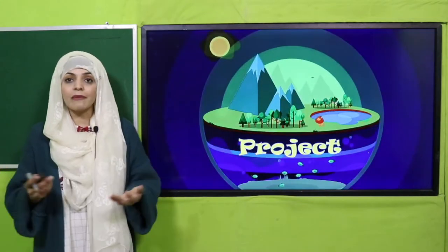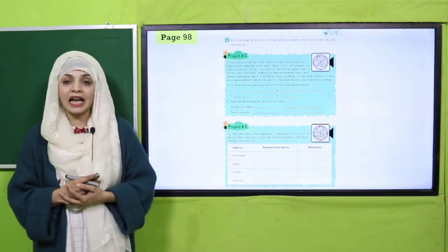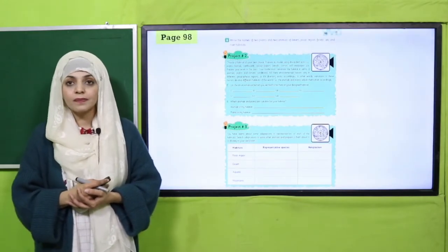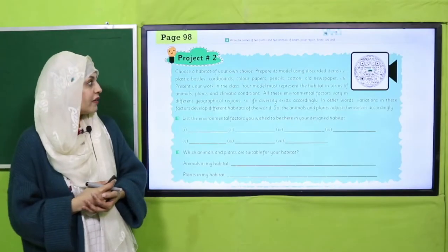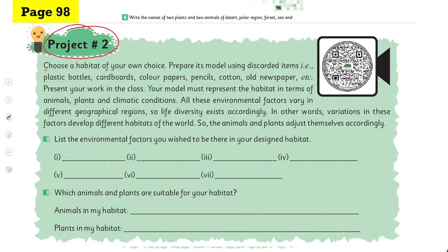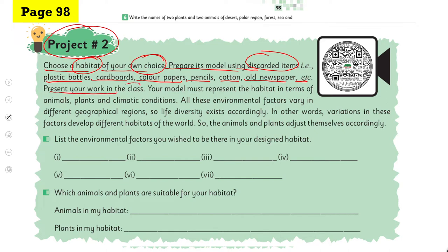Now is the time for your project. The project is given on page number 98. Quickly open the page. Let's have a look at project number two: choose a habitat of your own choice, prepare its model using discarded items - plastic bottles, cardboard, color papers, pencil, cotton, old newspaper, etc. Present your work in the class.